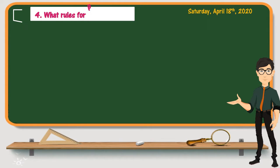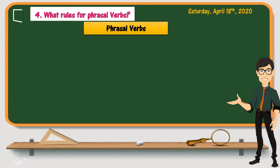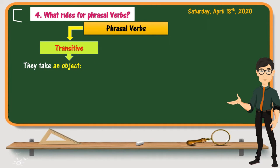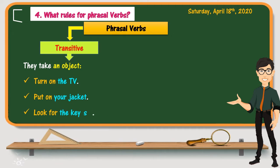Now let us discover some rules to respect when using phrasal verbs. The first thing is that phrasal verbs, just like other verbs, can be transitive — meaning they need or take an object. For example: turn on the TV, put on your jacket, look for the keys. We simply cannot use verbs like turn on, put on, or look for without an object.